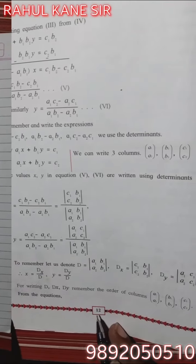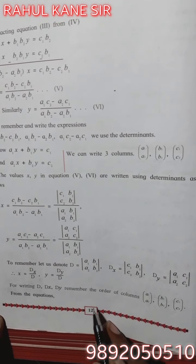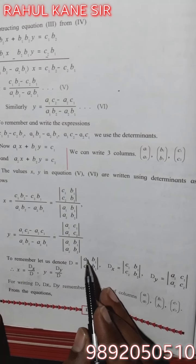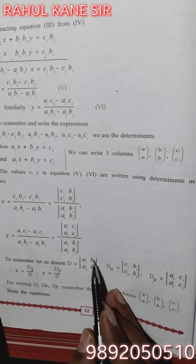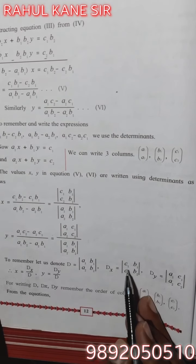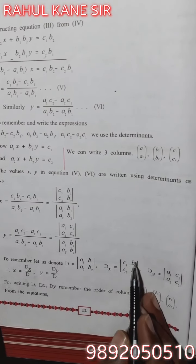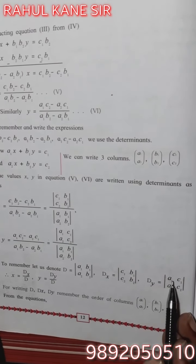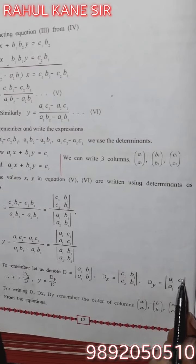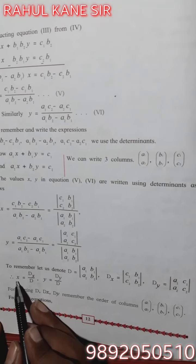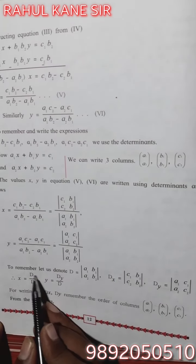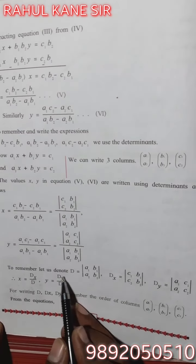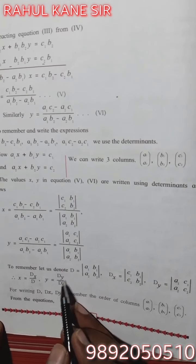Page number 12, Cramer's rule: D equals |A1, A2, B1, B2|; Dx equals |C1, C2, B1, B2|; Dy equals |A1, A2, C1, C2|. Then x equals Dx upon D and y equals Dy upon D.